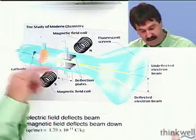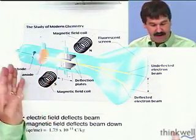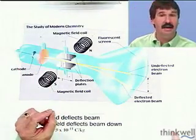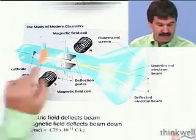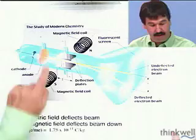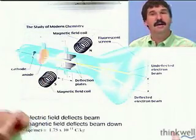They leave the cathode, they accelerate through this potential difference, and most of them just collide on the anode. But a few of them manage to make it through a small pinhole in the middle of the anode, and so they continue to travel then.